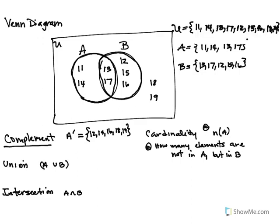Then we have the union. A union B means bring together everything in A with everything in B — it's a uniting of the sets. Whatever you're taking the union of, you bring all of those elements together. So A union B gives us 11, 14, 13, 17, 12, 15, and 16.